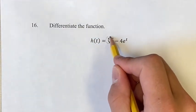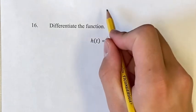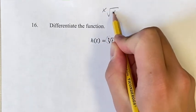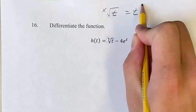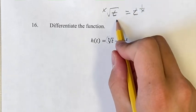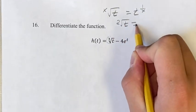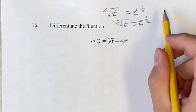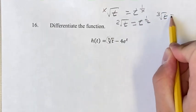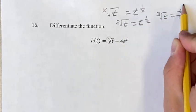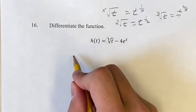You might be asking yourself, how are we going to find the derivative of that? You have to remember, the x root of t is going to be t to the 1 over x. The square root of t will be t to the 1 half, cube root of t will be t to the 1 third. So here it would be t to the 1 fourth.